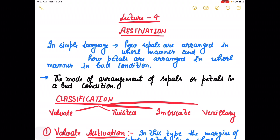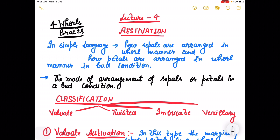Good morning learners, fresh morning Sunday and we are going to continue with our lecture on morphology of flowering plants. Till now we have discussed Calyx, Corolla, and we have talked about the four whorls. Then we talked about the aestivation and forms of Calyx and Corolla. The remaining two whorls we have to talk about are Androecium as well as Gynoecium in complete detail.